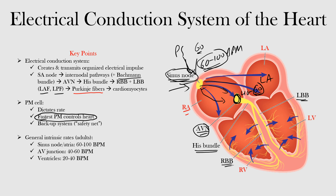Each cell with pacemaking function has a set intrinsic rate at which it will automatically fire. The sinus node fires between 60 and 100 beats per minute in adults. Atrial cells fire at around 60 beats per minute or slightly less. The AV junction — which includes the AV node and bundle of His — has an intrinsic rate between 40 and 60 beats per minute. The bundle branches fire between 40 and 45 beats per minute, and the ventricular Purkinje cells between 20 and 40 beats per minute.